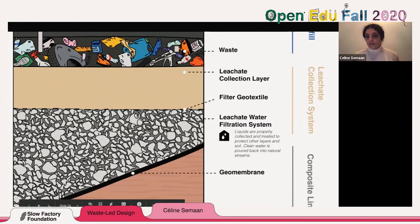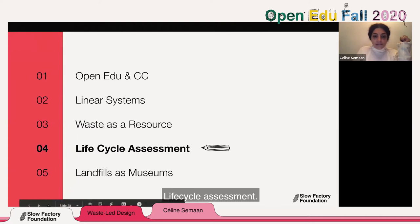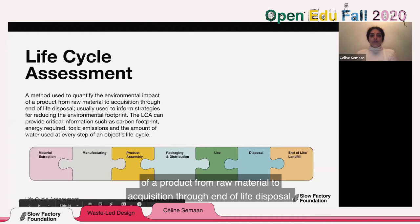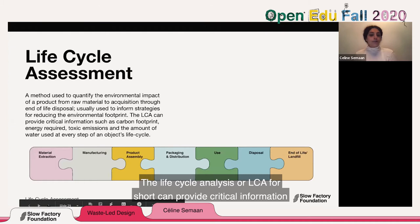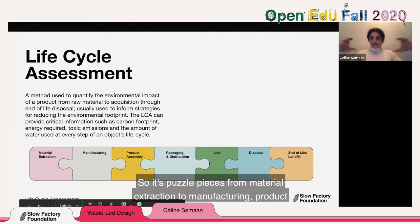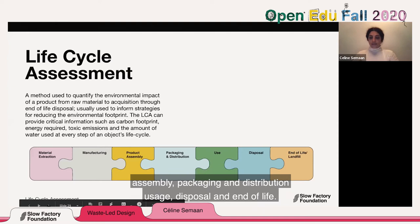Life cycle assessment is a method used to quantify the environmental impact of a product from raw material acquisition through end-of-life disposal, usually used to inform strategies for reducing the environmental footprint. The life cycle analysis, or LCA for short, can provide critical information such as carbon footprint, energy required to create it, toxic emissions, and the amount of water used at every step of an object's life cycle — from material extraction to manufacturing, product assembly, packaging and distribution, usage, disposal, and end-of-life.